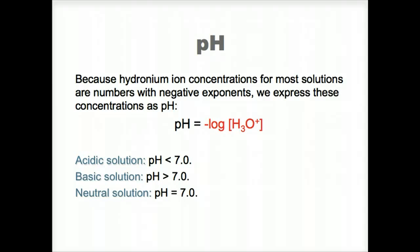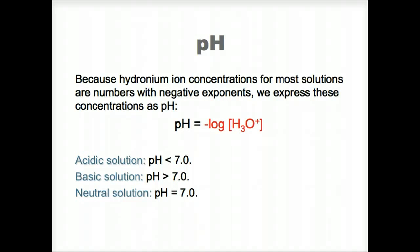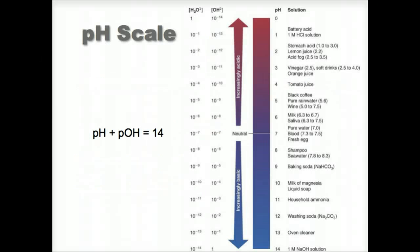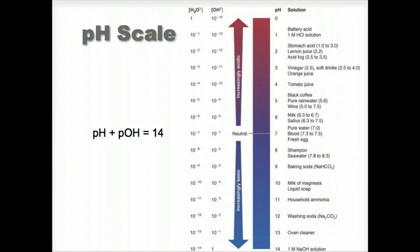At pH 7, the hydrogen ion concentration equals the hydroxide ion concentration. An acid solution has more hydrogen ions than hydroxide ions. This slide shows the pH scale and includes some common substances. Note that blood is about pH 7, and milk of magnesium is around pH 10.